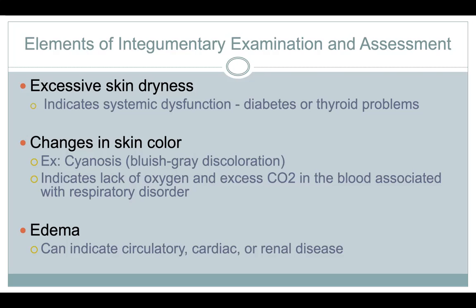If you have a change in skin color and it turns blue or gray — which is called cyanosis — that means you've got a lack of oxygen to that part of the skin. That's associated with either oxygen being cut off to that part of the body or a respiratory disorder with too much carbon dioxide in your blood.